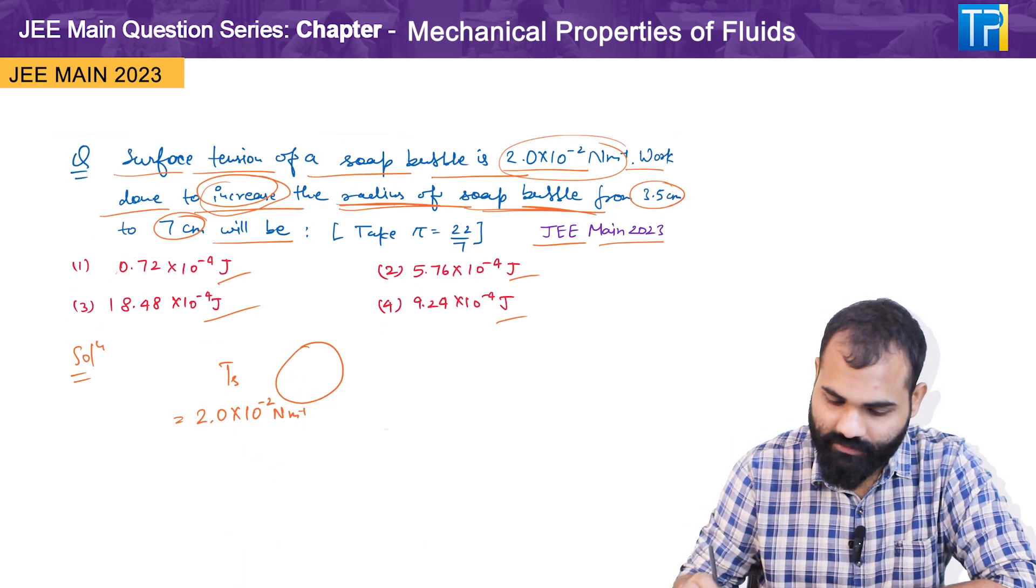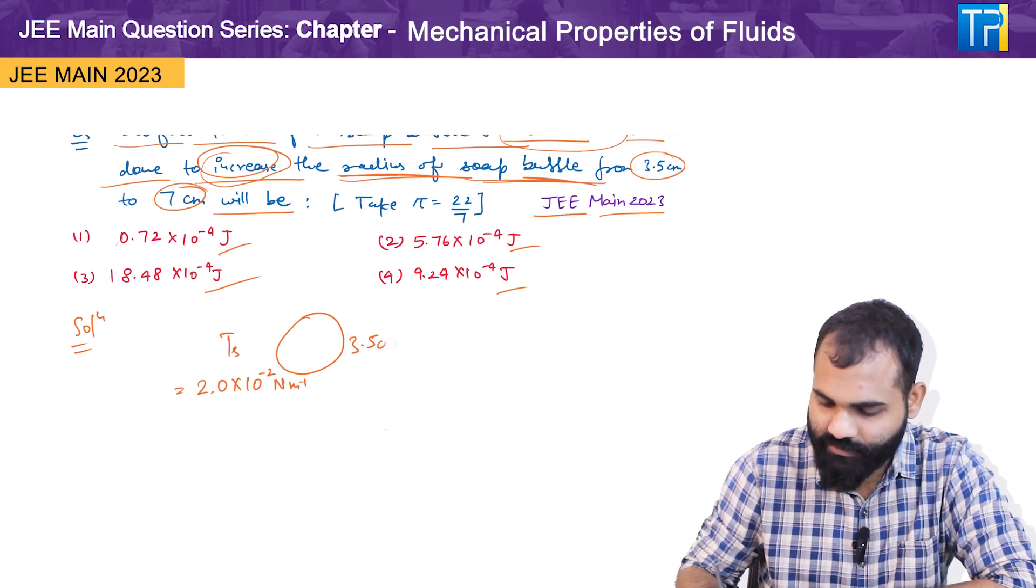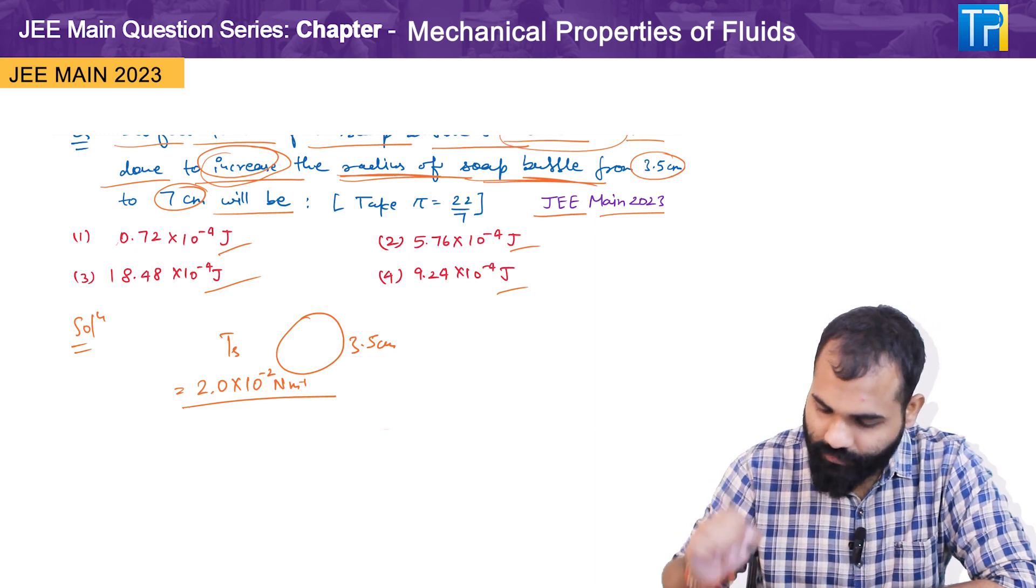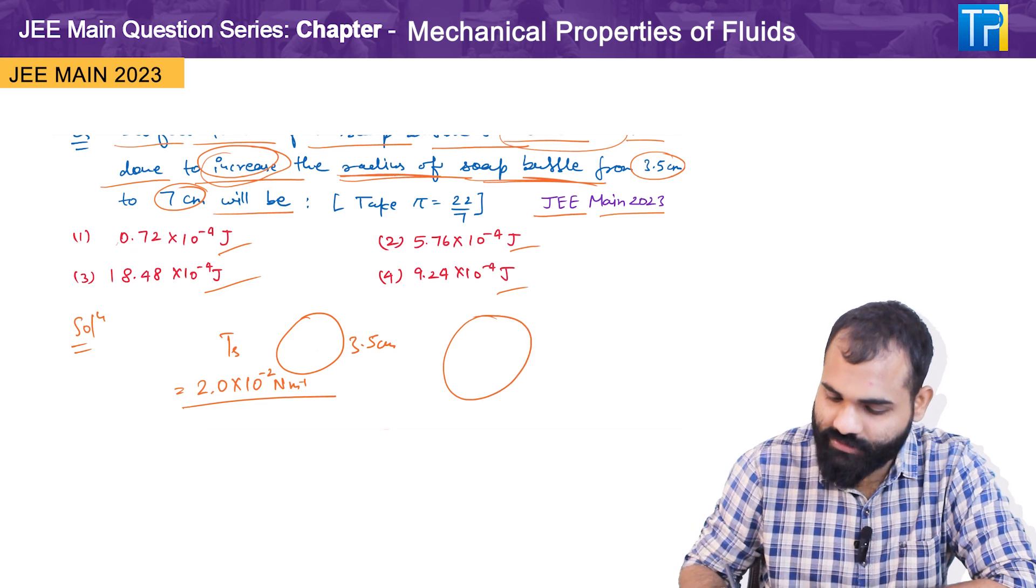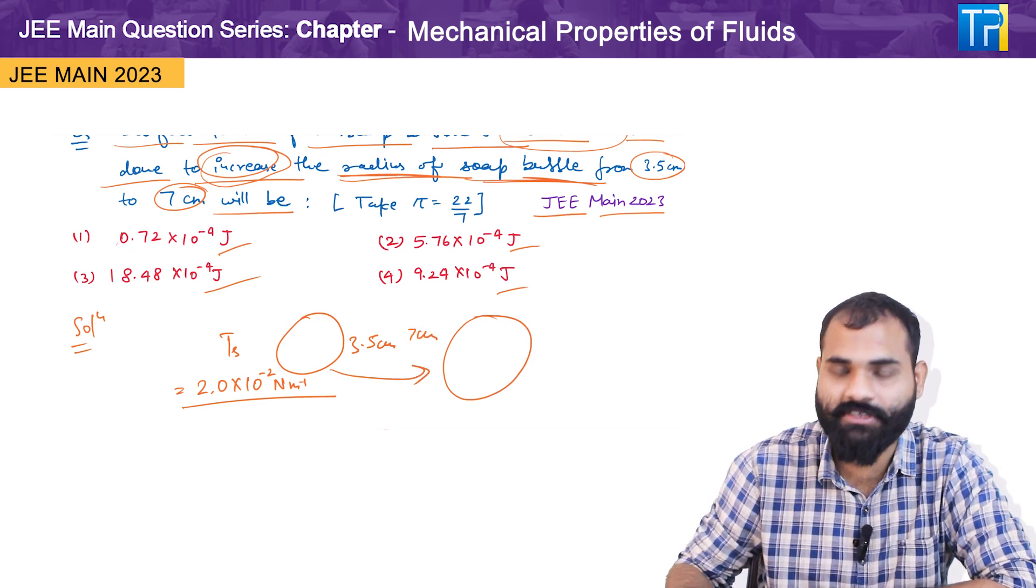And we have to find the work done to increase the size of the bubble from 3.5 centimeter to 7 centimeter. So let us solve this question.